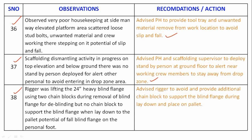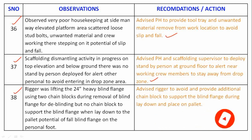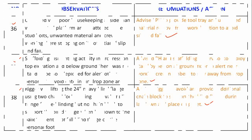Observation 38: A rigger was lifting a 24-inch heavy blind flange using two chain blocks during removal of the blind flange for de-blinding, but there were no chain blocks to support the blind flange when laying it down to the pallet, with the potential for the blind flange to fall on personnel's feet. Recommendation: Advise riggers to provide additional chain blocks to support the blind flange during lay down and placing on the pallet.